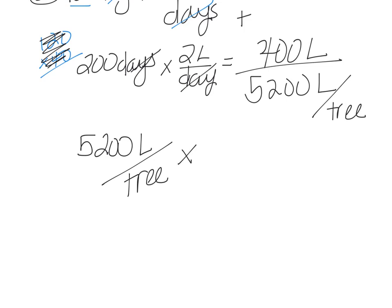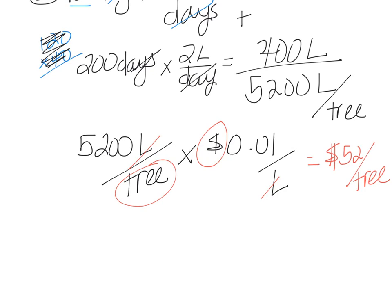So 5,200 liters per tree for the year. And that is multiplied by a penny per liter. So now our liters cancel out. And you could do this math in your head maybe, or if you needed to do it off to the side, that's fine. But we're going to end up with dollars per tree as our remaining unit. So it's going to cost $52 per tree to water the trees.